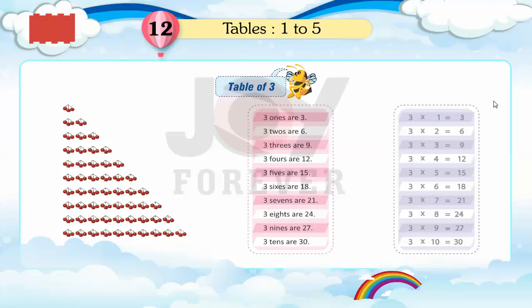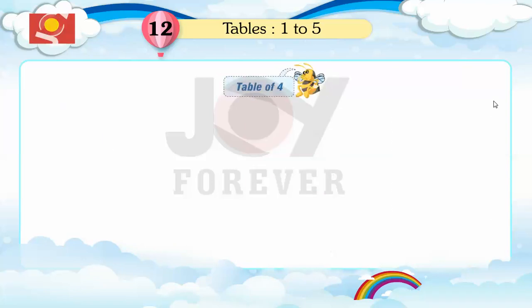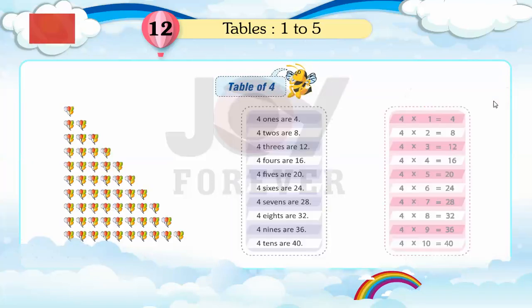3 sevens are 21, 3 eights are 24, 3 nines are 27, 3 tens are 30. Table of 4: 4 ones are 4.